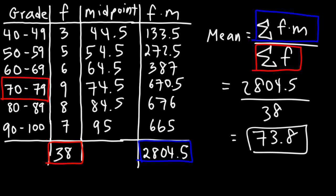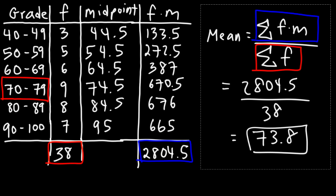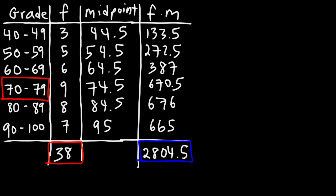Here's another question: in which interval can the median and the mode be found? The mode occurs where the frequency is the highest, and the frequency is highest in the 70 to 79 interval. So the mode exists between 70 and 79.